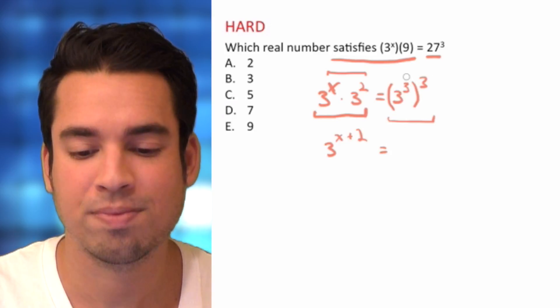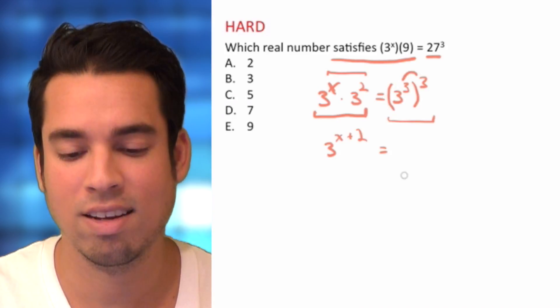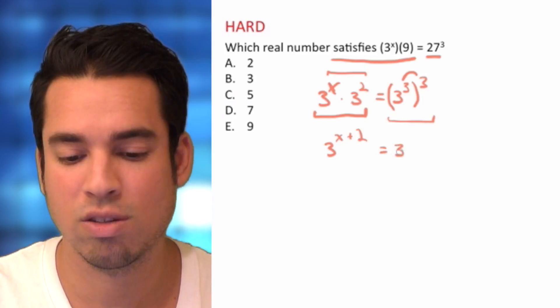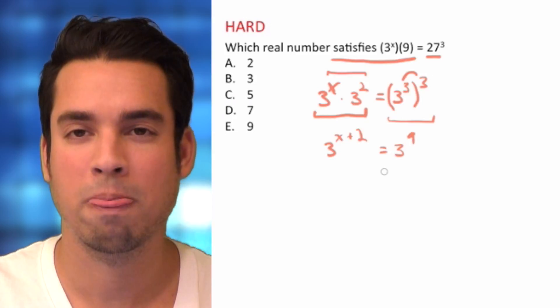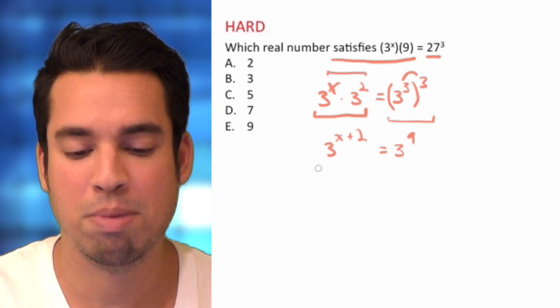So we have to multiply these exponents, not add. So we have 3 to the ninth power. Okay, so now this is a little bit better because when we have the same base on the left side and the right side,